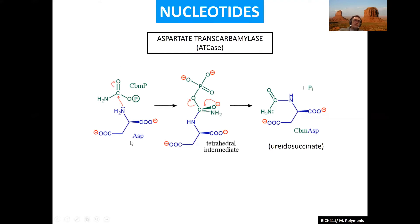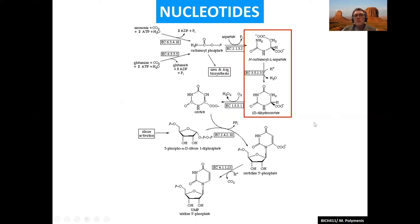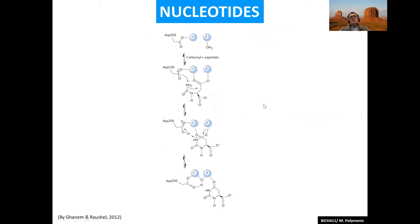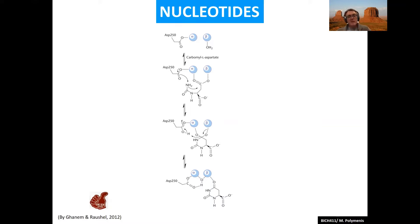Once you have carbamoyl phosphate, the aspartate will attack it. The amino group performs a straightforward nucleophilic attack and you make carbamoyl aspartate. You can then close the ring to make dihydroorotate. I'm showing you this mechanism that was discovered in 2012 — the amino group on carbamoyl aspartate attacks the carbon on the carboxyl group to close the ring. This scheme was discovered by Frank Rousseau, a professor in biochemistry, biophysics, and chemistry here at A&M. Some Aggie pride here.